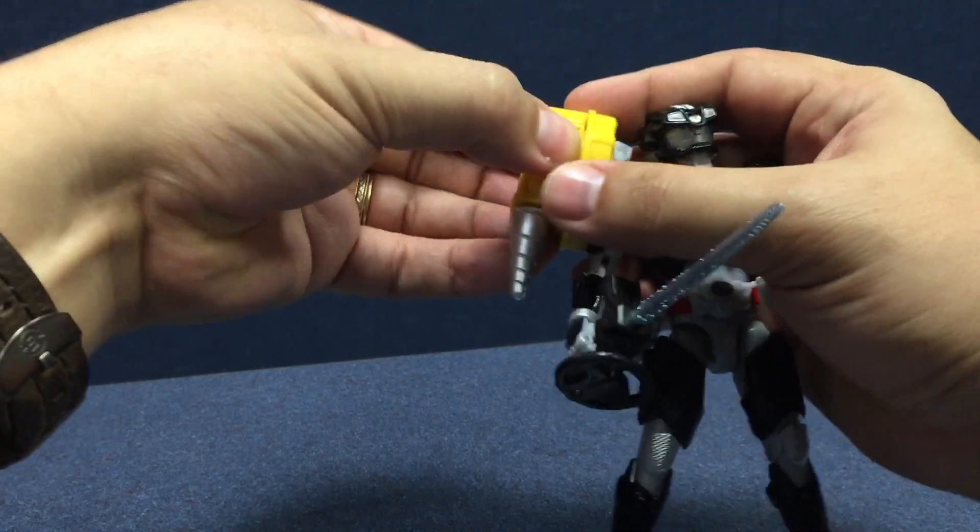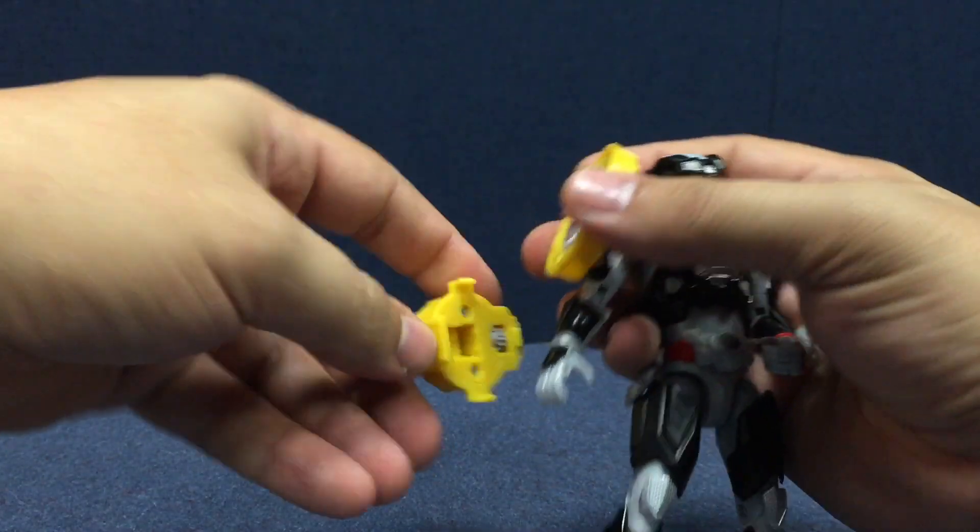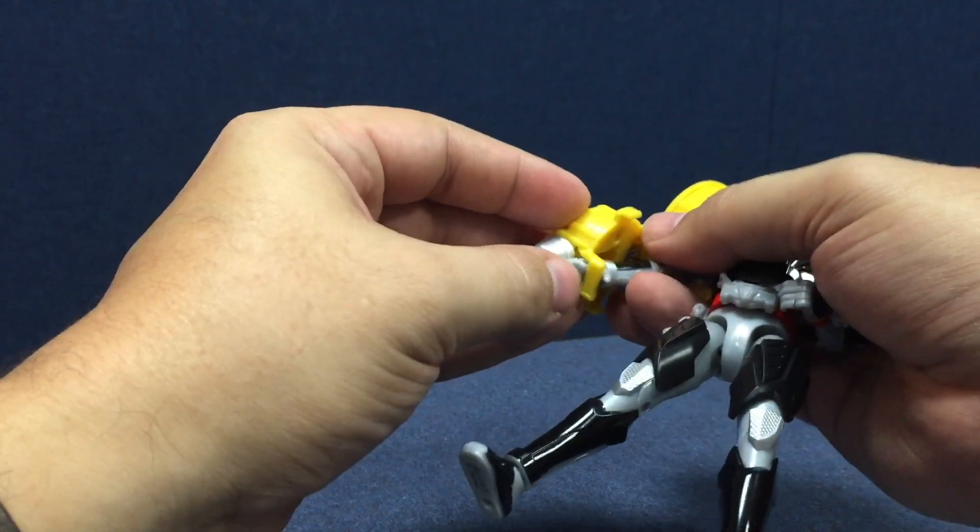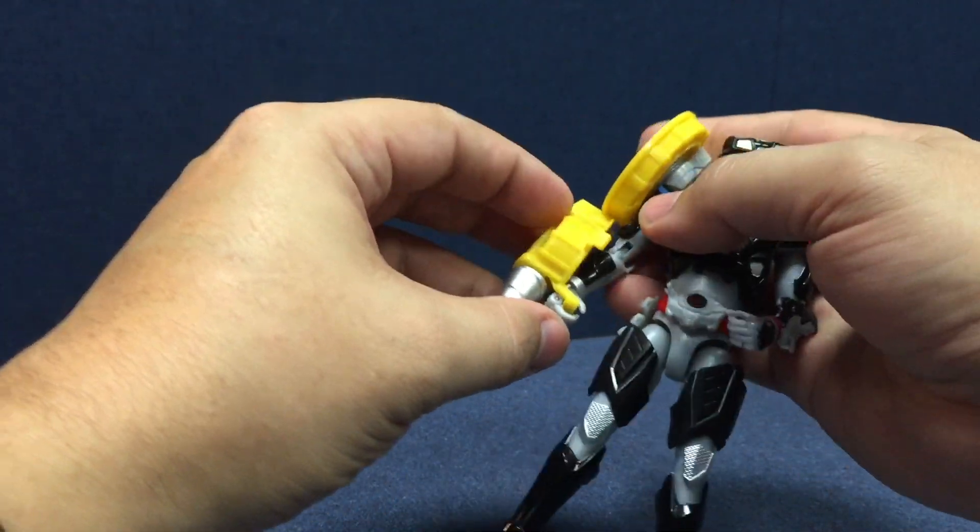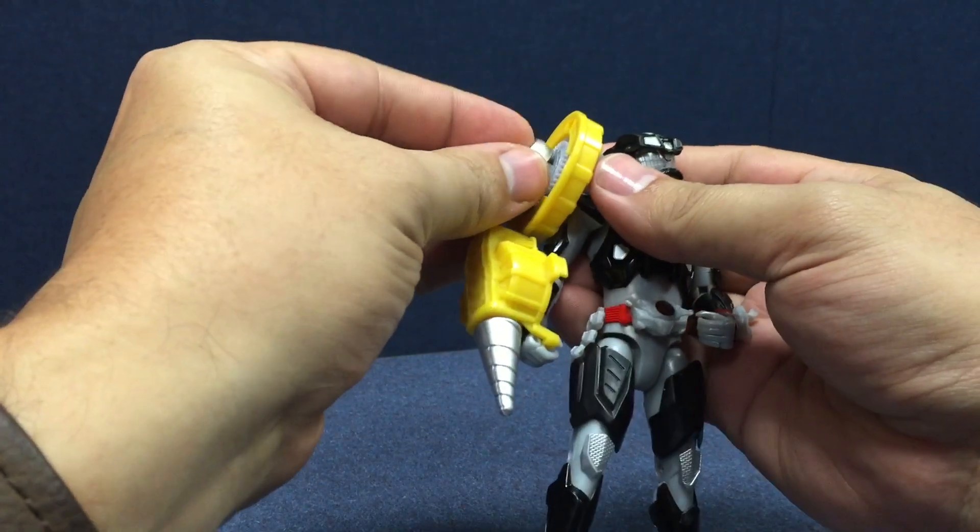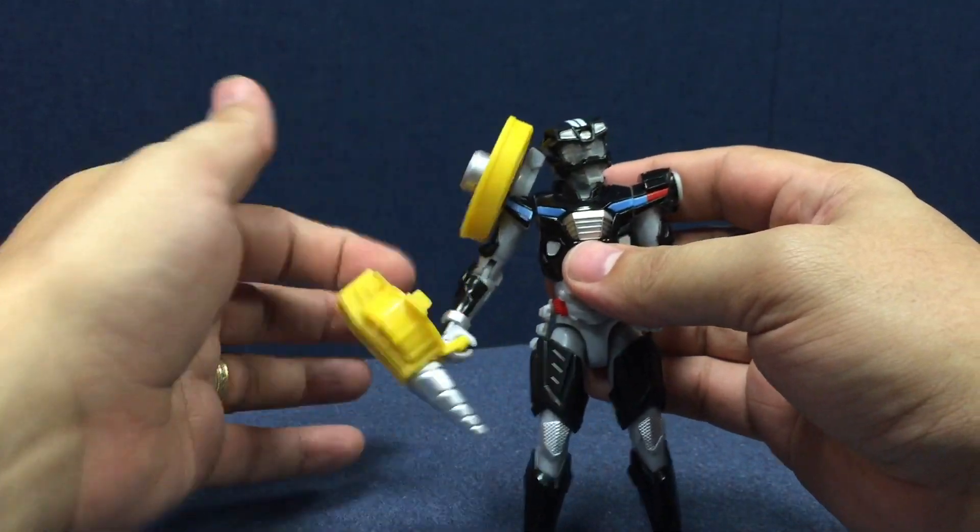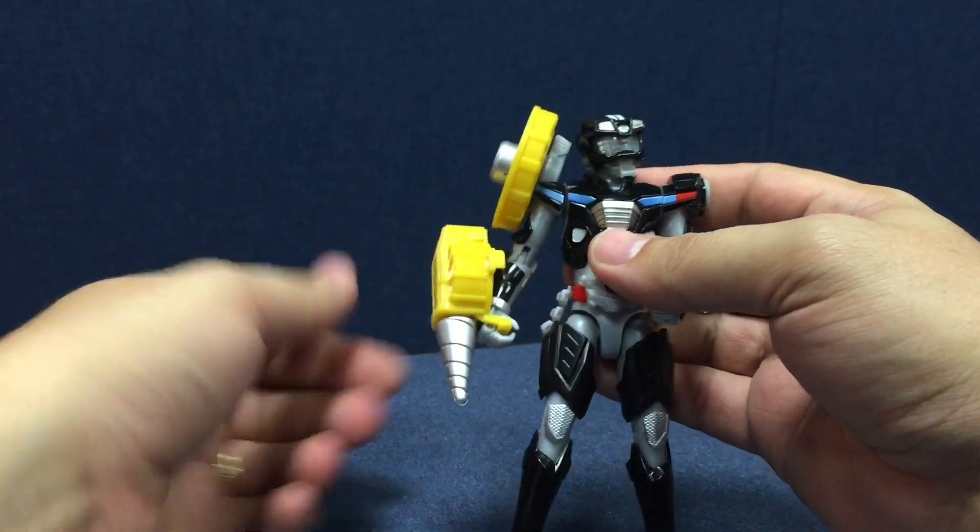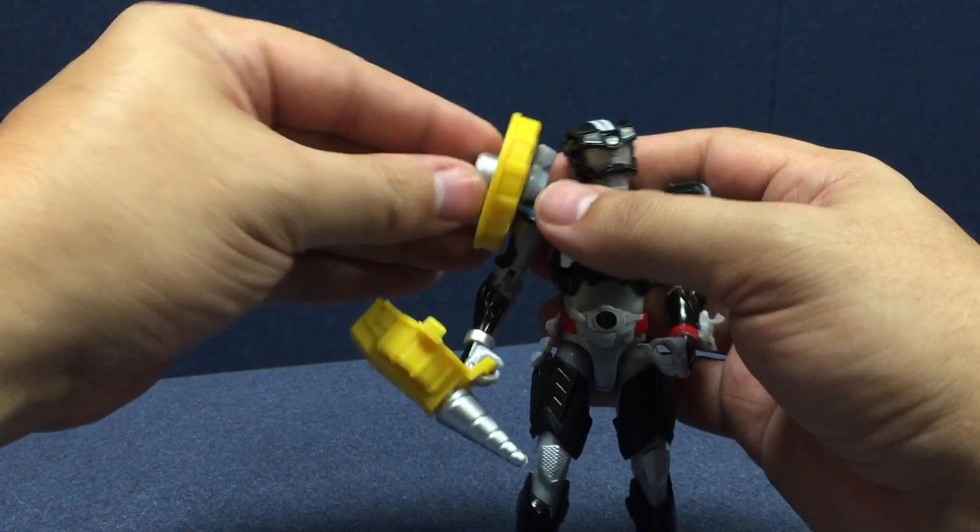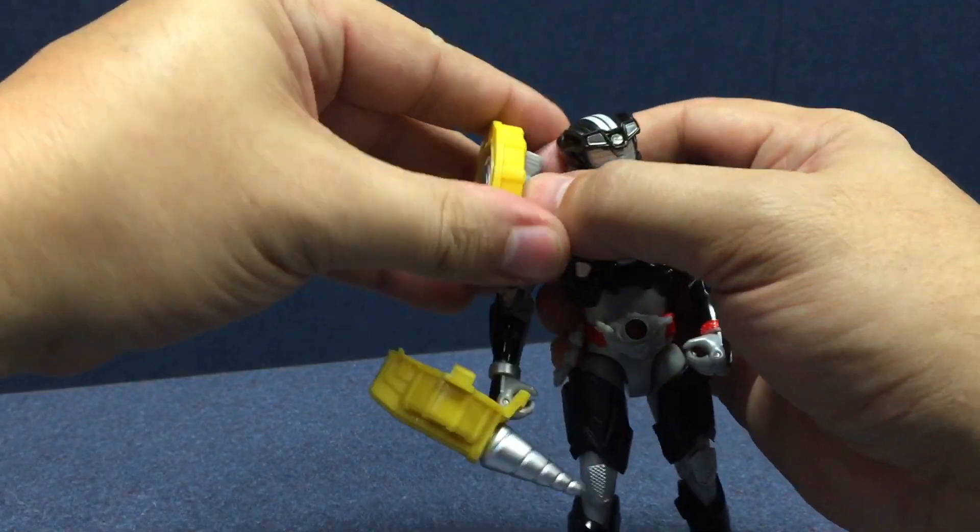So this can also be, if you move the handle, you can also pop this off and have them hold it as like a hand weapon as well. And then put that cap back on. And it spins freely like it does on drive.